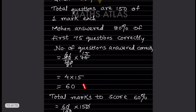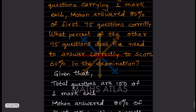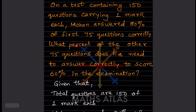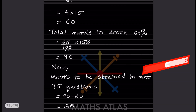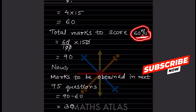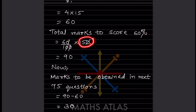Next, what percentage of the other 75 questions does he need to answer correctly? First, we calculate the total marks needed to score 60%. So 60 divided by 100, multiplied by 150 total marks. The values cancel — 60/100 × 150 — giving us 90. So total marks to score is 90.